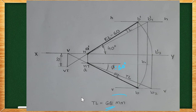So the solution is true length as 65 mm and horizontal trace as like this. This is the solution. Thank you.